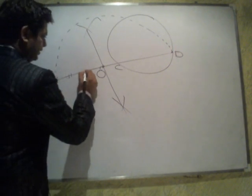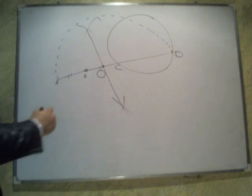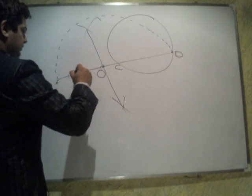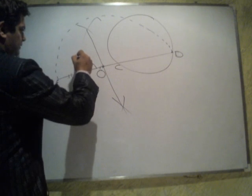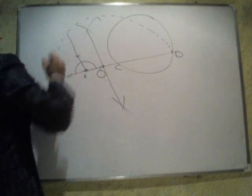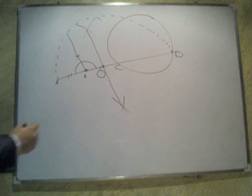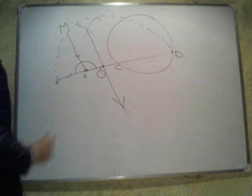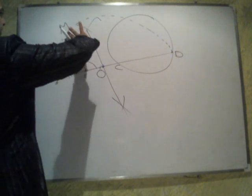Now, since B is the point from where you need to draw the tangents, draw a perpendicular over here. Now let it be M.